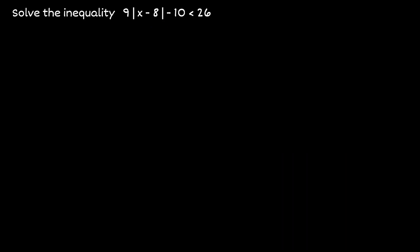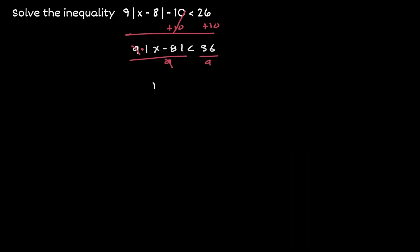Let's get rid of that 10 by adding 10 to both sides. Notice that 9 is in front of the absolute value — that's implying multiplication. So if we want to get rid of a value that is multiplying, we do the opposite, which is division. Let's divide by 9 on both sides, which gives us 4.